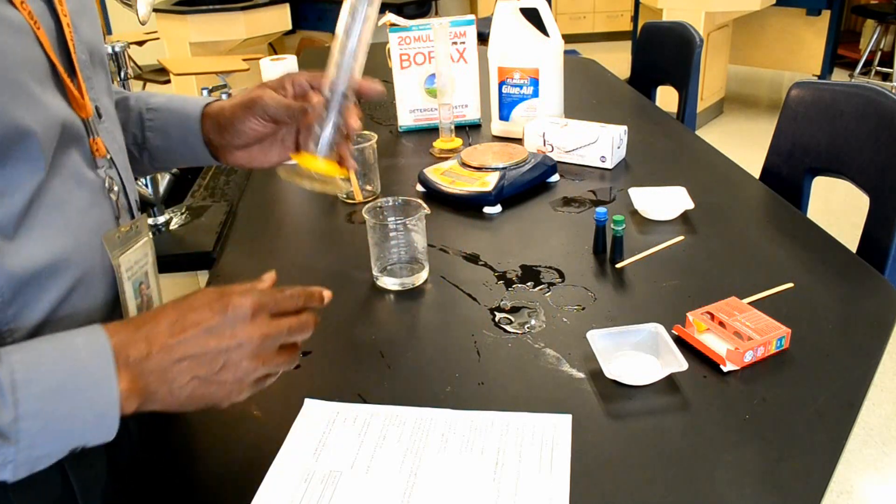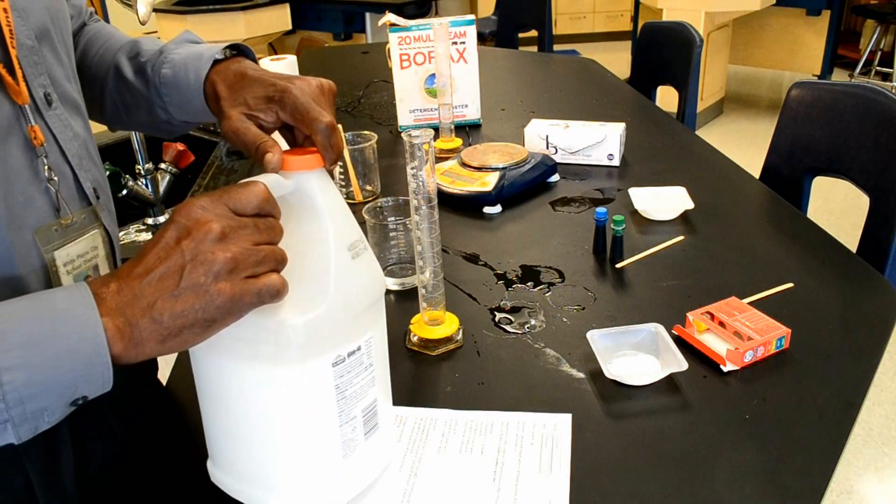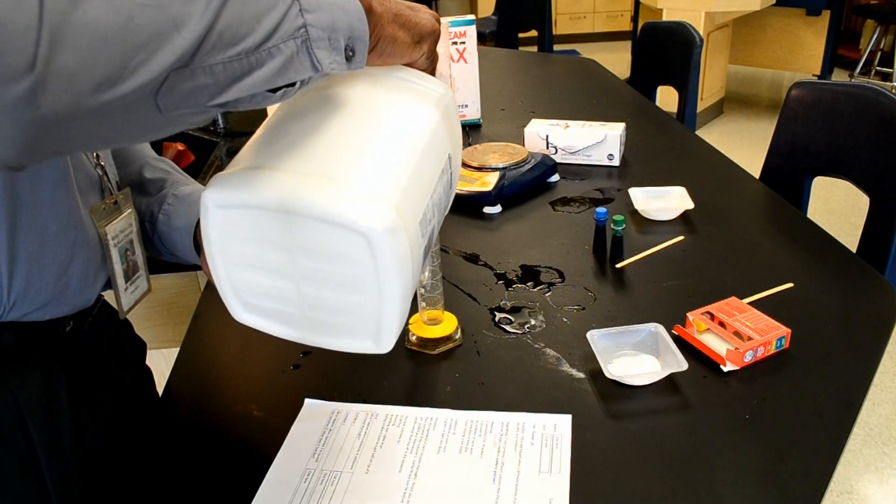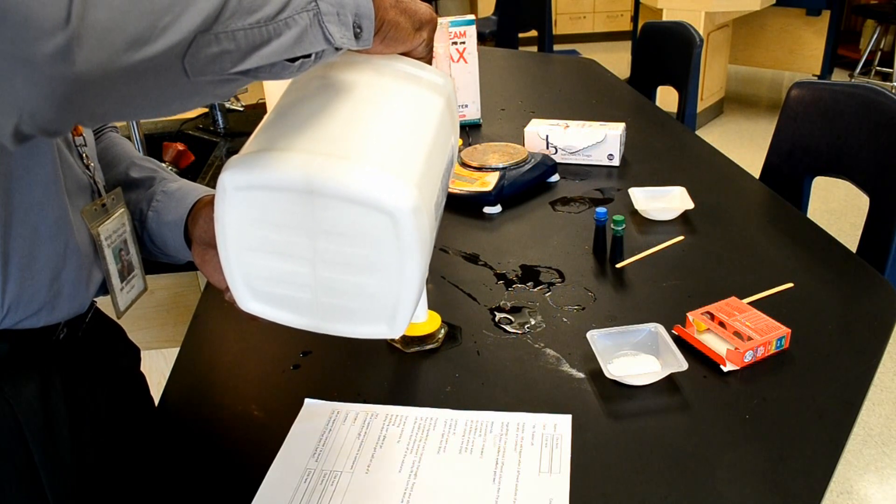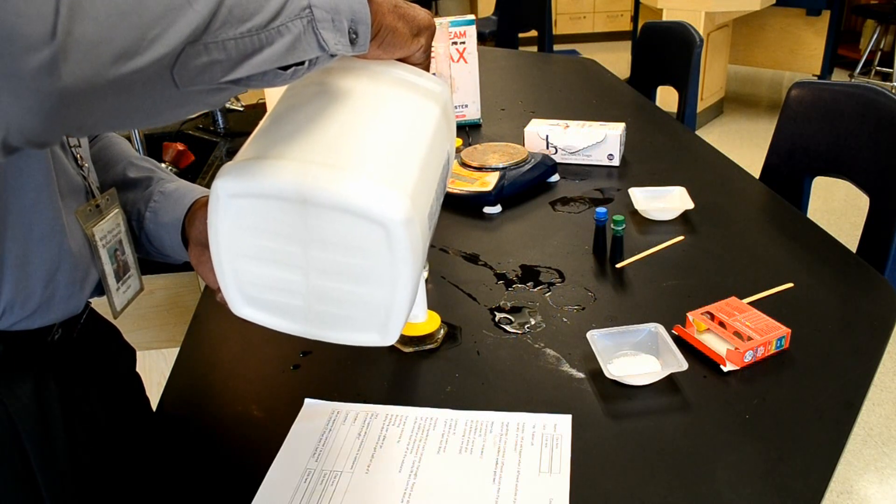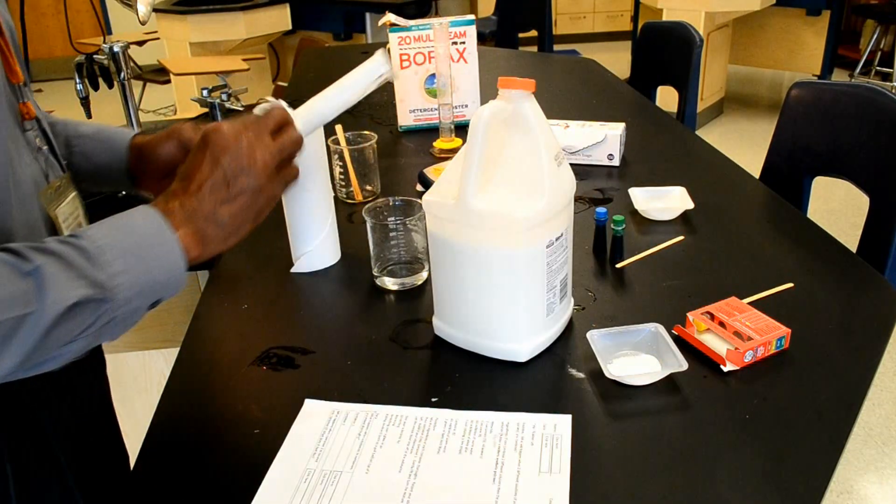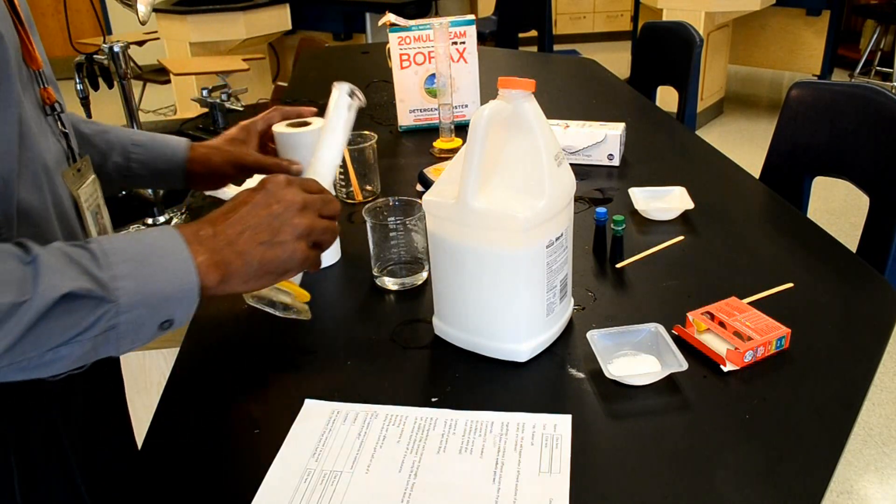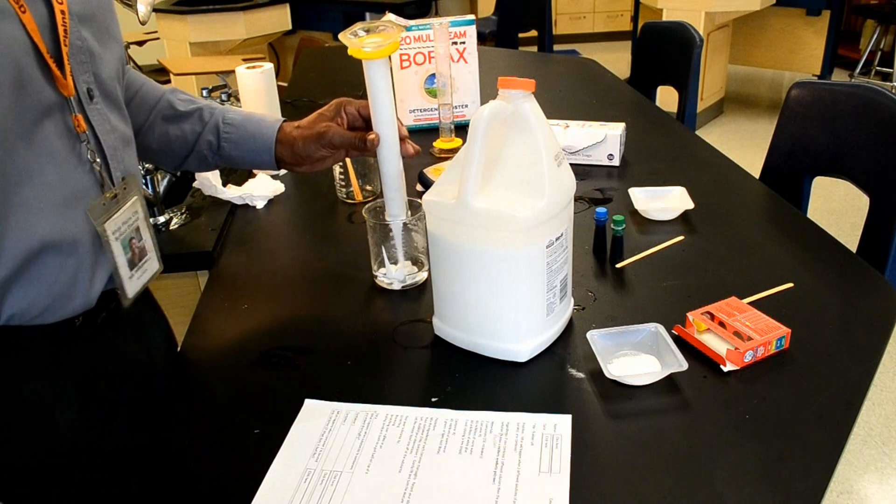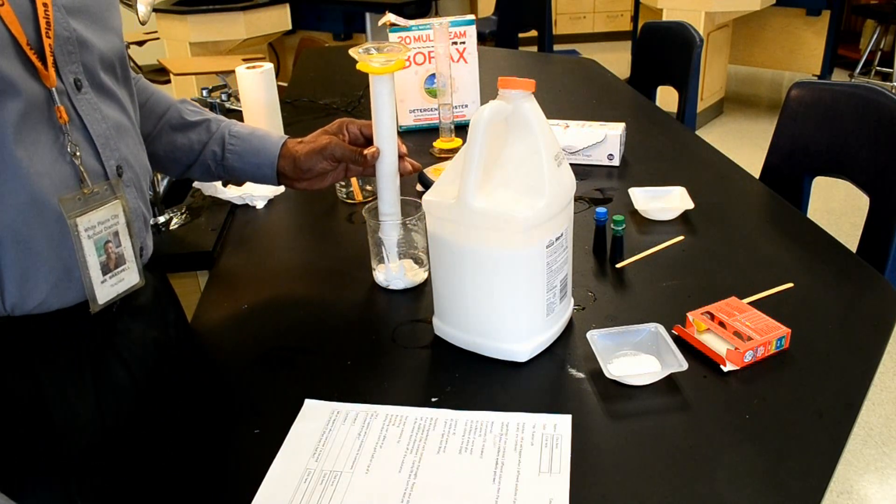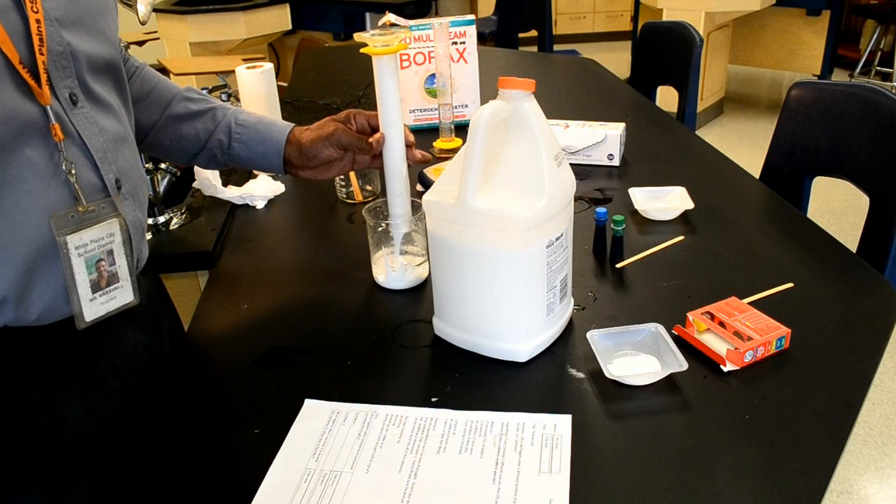Now, using the same graduated cylinder, I'm going to measure out 80 ml of glue. Remember, the glue provides the polyvinyl acetate molecules that we need to make the flubber. That's about 80 ml of glue, and we're going to add this glue to the water. Since glue is very viscous, meaning that it flows very slowly, this is going to take some time to get all the glue out of the graduated cylinder.